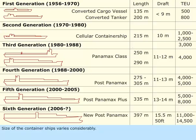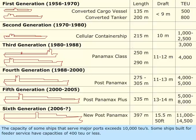The size of container ships varies considerably. The capacity of some ships that serve major ports exceeds 10,000 TEUs, while some ships built for feeder service have capacities of 400 TEU or less.